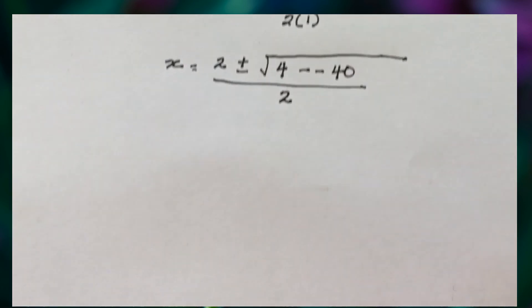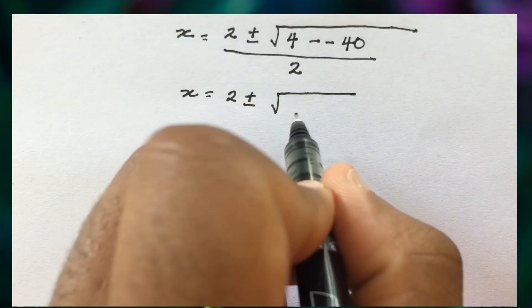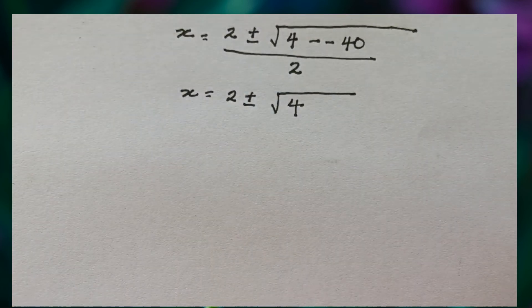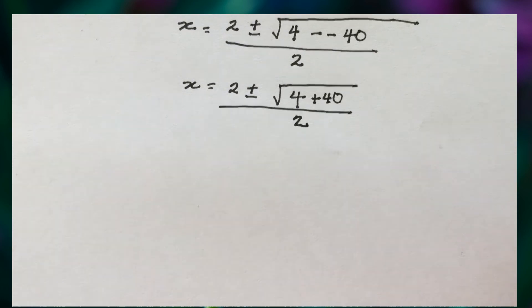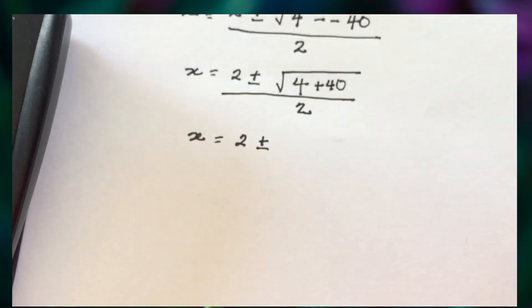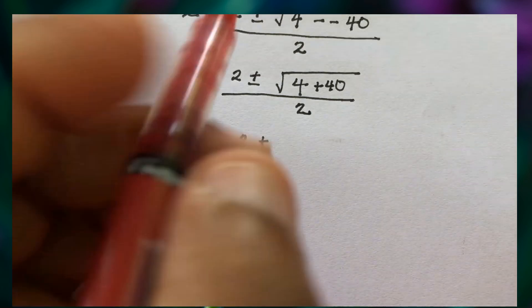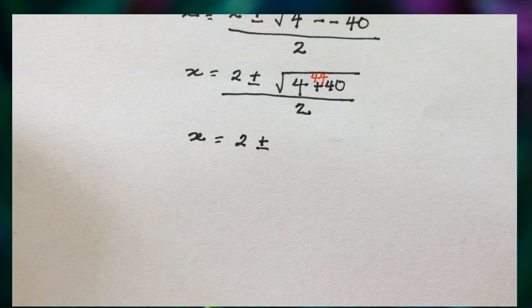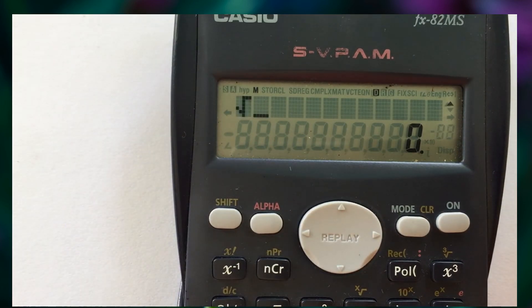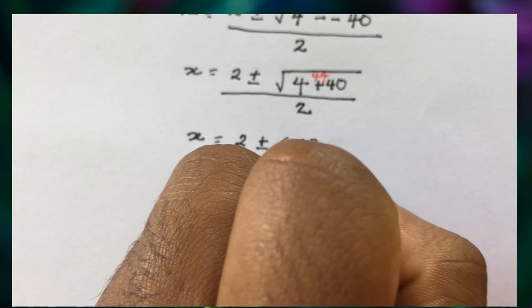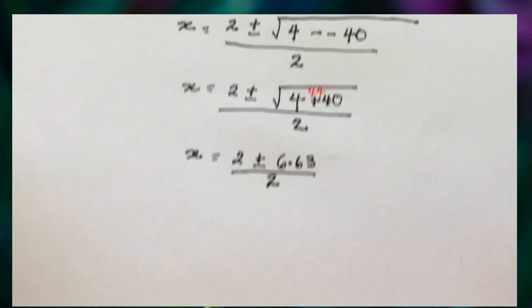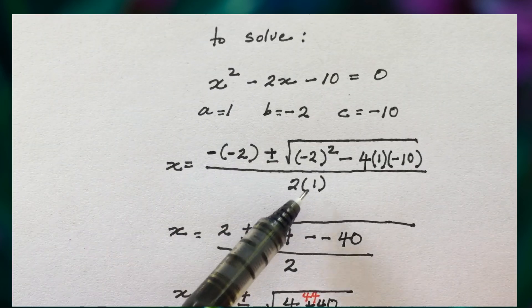Working it down, x equals 2 plus or minus the square root of 4, and then a negative beside a negative turns into a positive, so we have plus 40, all over 2. So we need 4 plus 40, which is 44. Finding the square root of 44 in the calculator gives us 6.63, and we divide all of this by 2.